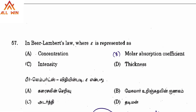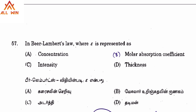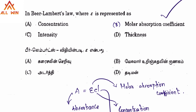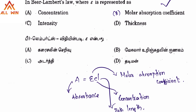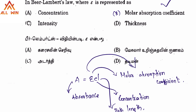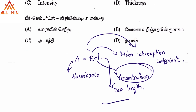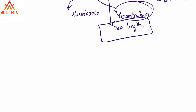In Beer-Lambert's law, epsilon (ε) is represented as the molar absorption coefficient, C is the concentration, and L is the path length.